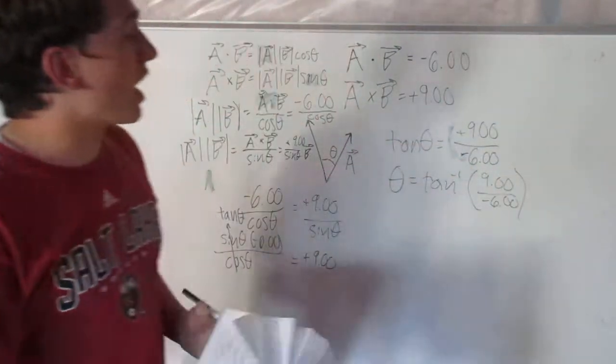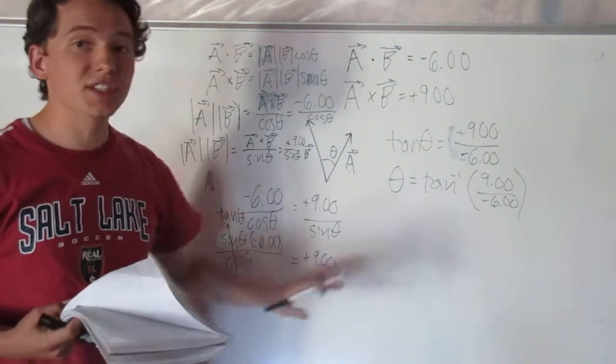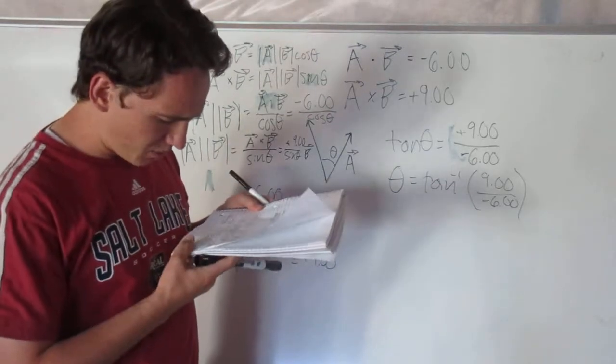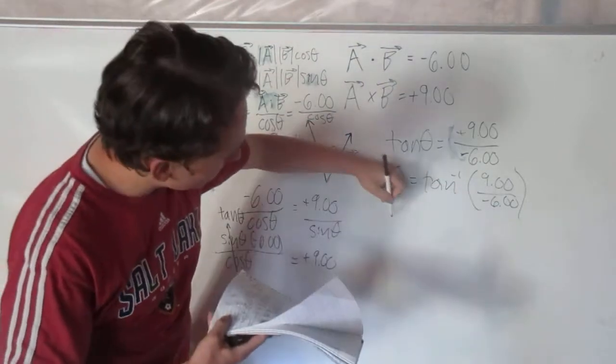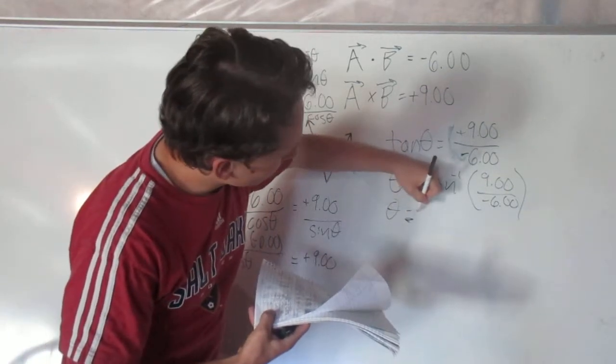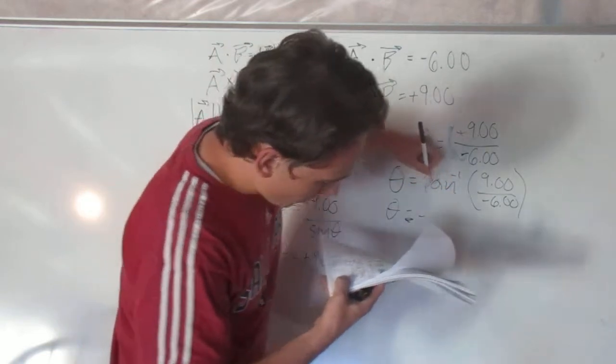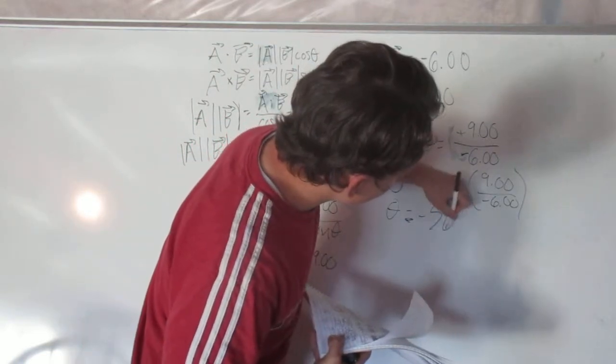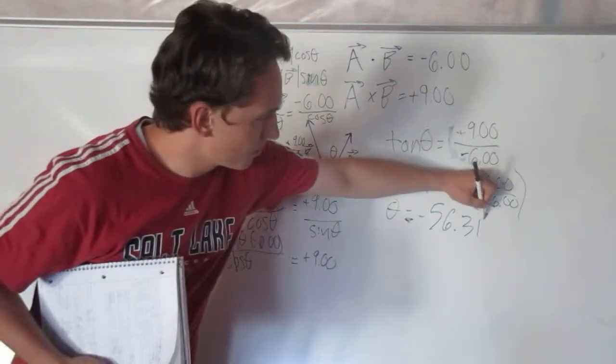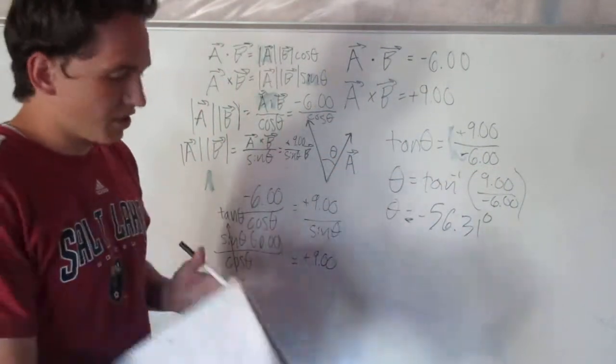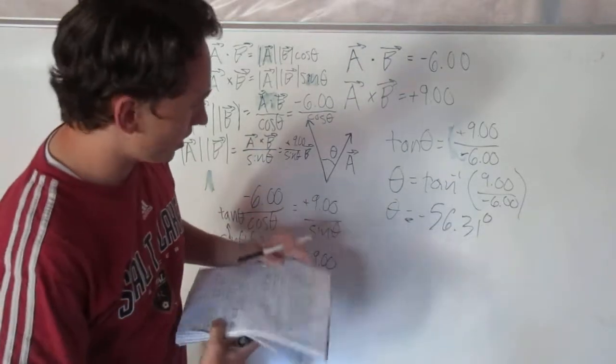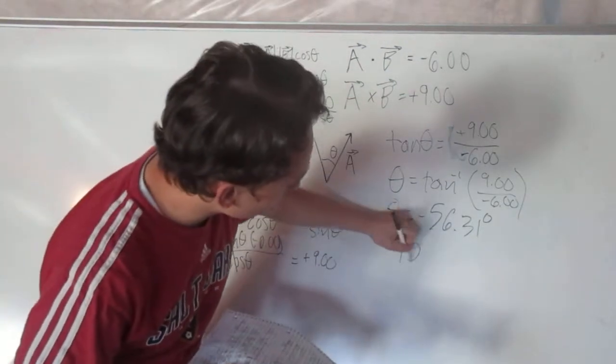Now what actually happened when I plugged this into my calculator, I got a different answer than the book. What I got was theta equal to about negative 56.31 degrees, and the answer that the book gives is 124 degrees.